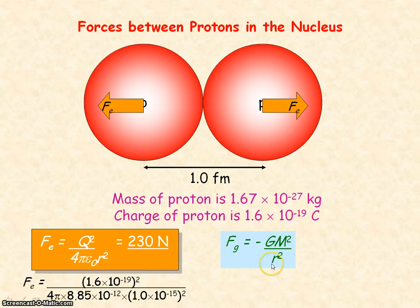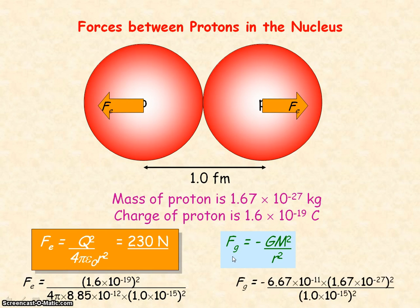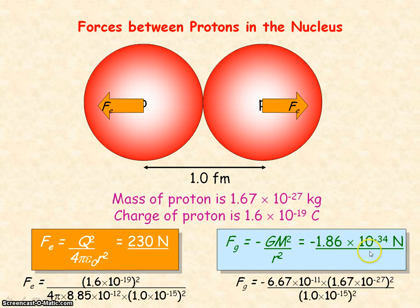Now use Newton's law of gravitation to determine the gravitational force between the two protons. And if we substitute in the values, we get the gravitational force in the order of 10 to the minus 34 newtons. So you can see that the gravitational force is negligible compared to the electrostatic force.